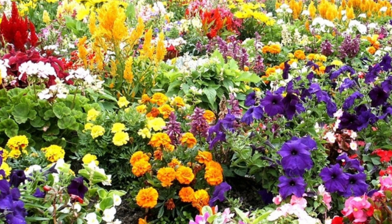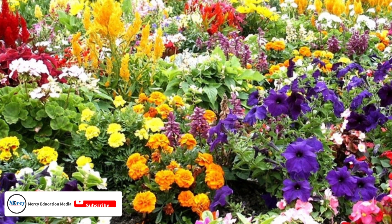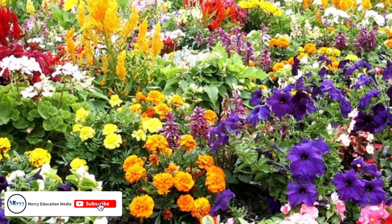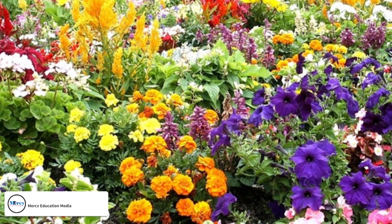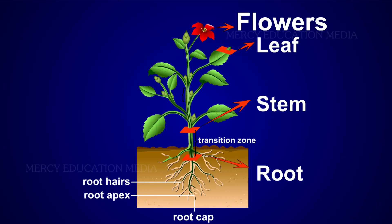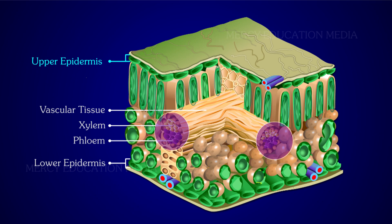The progressive evolution in plants has resulted in increasing complexity of structures. In higher plants, root, stem, leaves, and flowers carry out different functions. Due to these divisions of labor, the cells of the plants are differentiated to form different tissues.